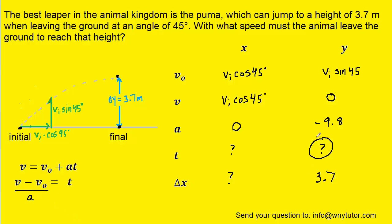Once we do that, we can fill in the known values from the y column of our chart. Now the zero minus vi sine 45 will just become negative vi sine 45. And then the negative in the numerator and the negative in the denominator will cancel. And now that we have an expression for the time, we can plug it into the area where we put the question mark.